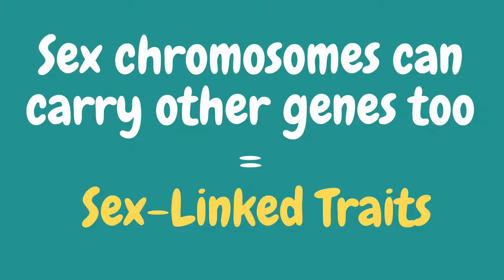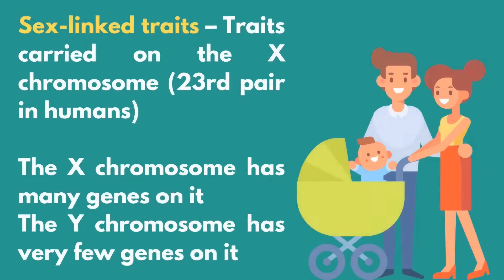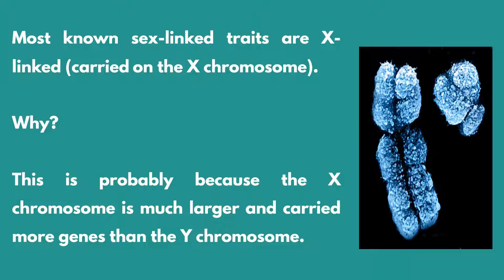Sex chromosomes can also carry other genes and might affect the individual phenotypically. These traits are transmitted from parents to offspring, especially if both parents are carriers of those specific genes. These genes are called sex-linked traits. Sex-linkage is a trait in which a gene is located on a sex chromosome. In humans, the term generally refers to traits influenced by genes on the X chromosome, because the X chromosome is large and contains many more genes than the smaller Y chromosome. Most known sex-linked traits are X-linked or carried on the X chromosome.